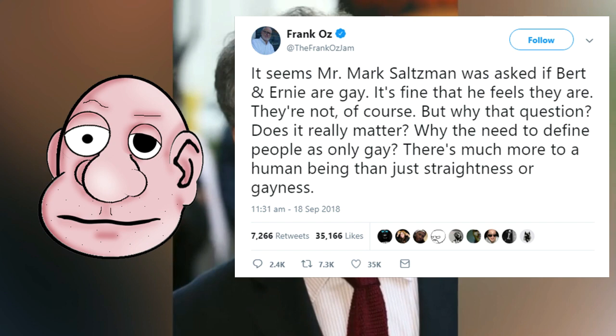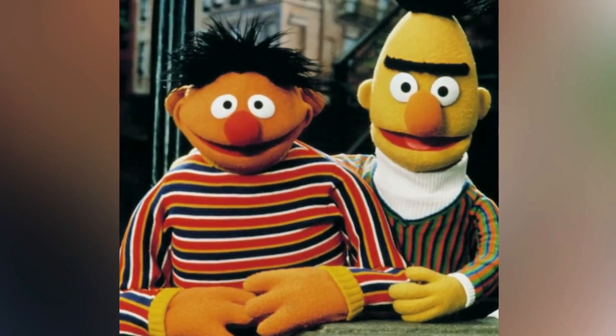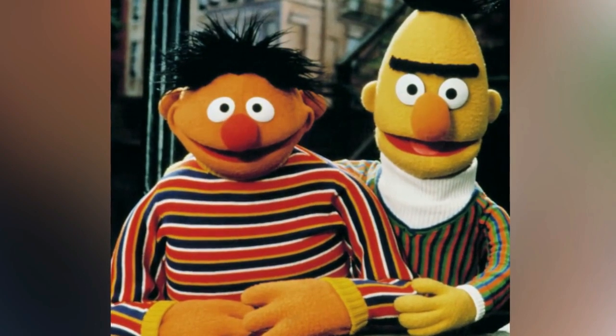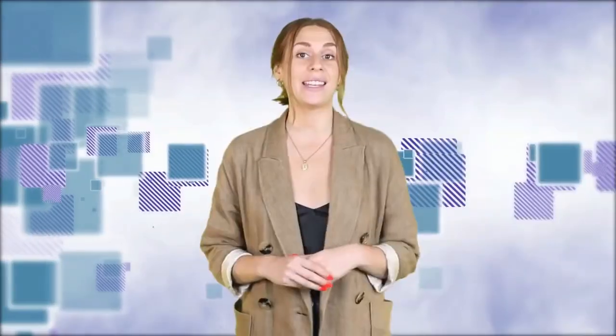Well said Frank. Of course now he's getting heat for that to the tune of 2,400 replies, because he only created the characters. What does he know? In an interview with Queer Tea, Saltzman said that when he was brought on board in 1984, he always wrote Bert and Ernie as if they were lovers. He said he didn't have any other way to contextualise them. He couldn't contextualise them as friends? Did he not have any mates growing up? Or the other kids were like, oh no, here comes Mark, he makes everything gay.